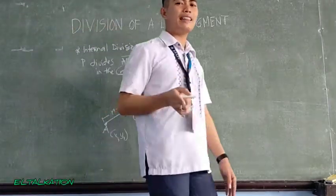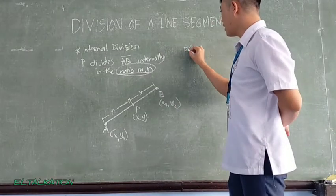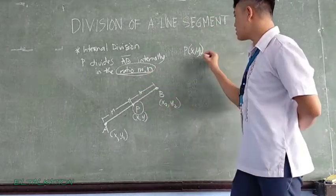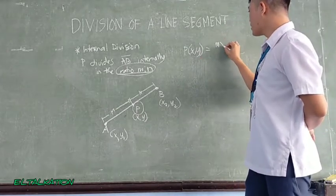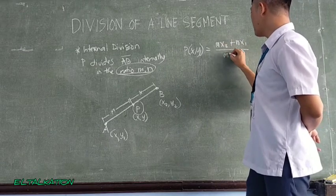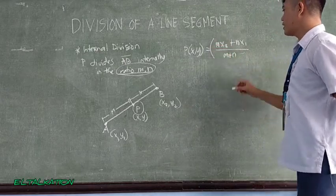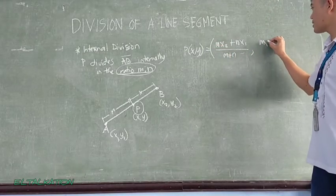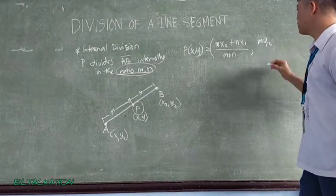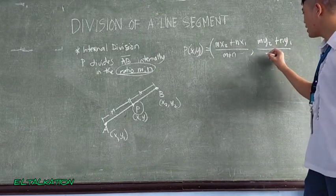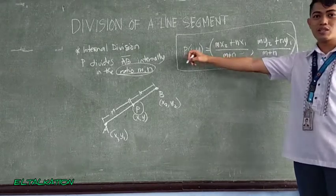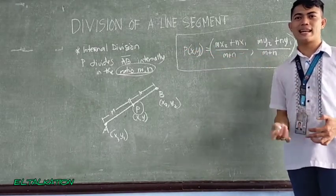So according to our book, so that is the ratio of M to N, while the point from P to B is the N ratio. Okay, let's have the formula in finding the internal division. So that is P(x,y). For us to find out what is the value of this one, or what is the coordinate of point P. So that is equal to M times x sub 2 plus N x sub 1 all over M plus N. Para mas maintindihan natin, let's have an example.